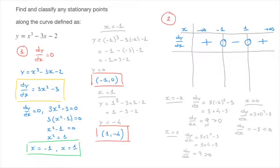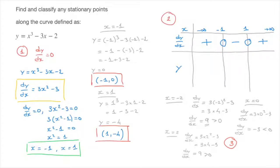We now know exactly how the sign of dy/dx changes from negative infinity to positive infinity, so we move on to step 3, where we classify each stationary point. I add a row for y in the table. From negative infinity to negative 1, dy/dx is positive, so the curve is increasing — I show this with an upward arrow. At x equals negative 1, the curve reaches the stationary point with coordinates negative 1, 0.